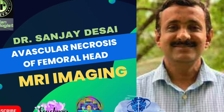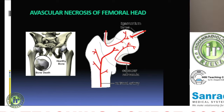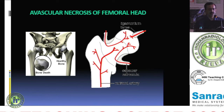Avascular necrosis (AVN) of the femoral head is now becoming very common in the post-COVID scenario — about a year and a half after COVID steroids have stopped. It has a precarious blood supply: the majority (~75%) comes from retinacular vessels through the neck to the head, with only about 5–10% from the artery of the ligamentum teres. Because these are all end arteries, steroids, alcoholism, substance abuse, and obesity lead to thrombosis of these end arteries, causing avascular necrosis of the femoral head.